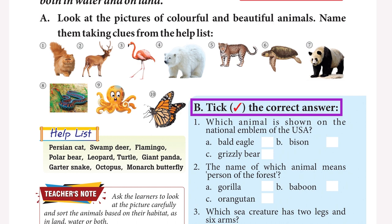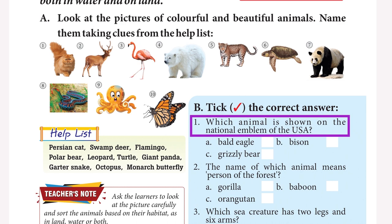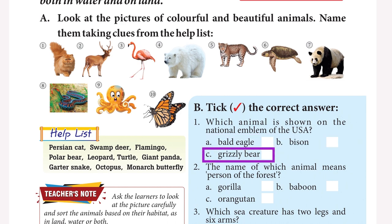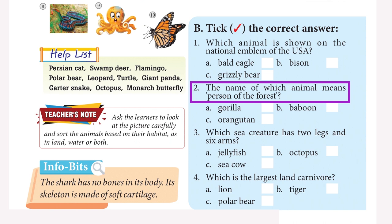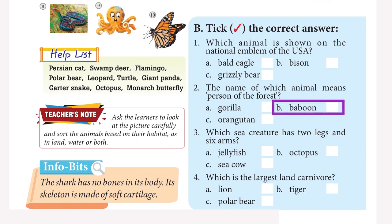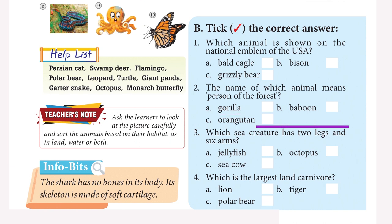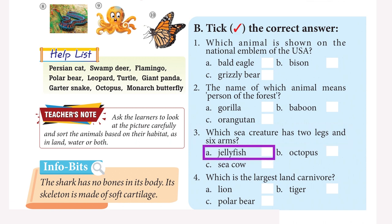Take the correct answers. Which animal is shown on the national emblem of USA? Answer: Bald eagle. The name of which animal means 'person of the forest'? Answer: Orangutan. Which sea creature has two legs and six arms? Answer: Octopus.